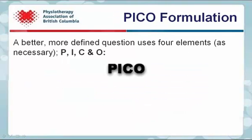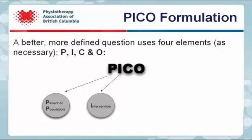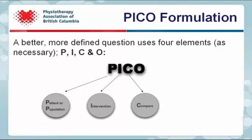A better, more defined clinical question uses four elements as necessary: P, I, C, and O. What do these letters stand for? P refers to patient or population, I refers to intervention, C to comparison, and O is outcome.